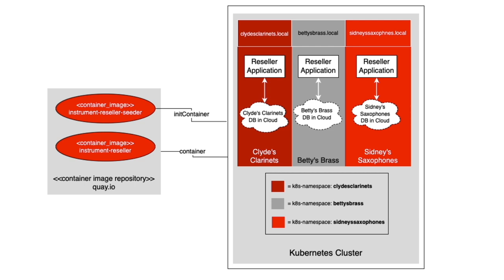Instrument Resellers is a multi-tenant application that runs under Kubernetes. There are three tenants: one's called Clyde's Clarinet, another one's called Betty's Brass, and the last one's called Sydney Saxophones. They run under a single Kubernetes cluster, and each tenant achieves isolation through a distinct Kubernetes namespace dedicated to each tenant.